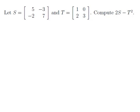Let S be the 2 by 2 matrix [5, -3; -2, 7], and T be the 2 by 2 matrix [1, 0; 2, 3]. Compute the matrix 2S - T².